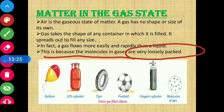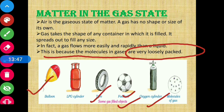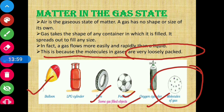Examples of gas-filled objects: balloon — gas is inside it — LPG cylinders, tires, football, oxygen cylinders. All these contain gas. The diagram also shows the molecules of gas spread far apart.